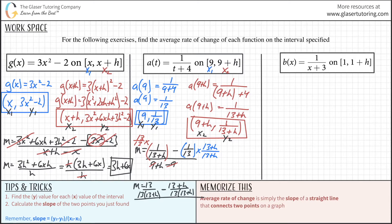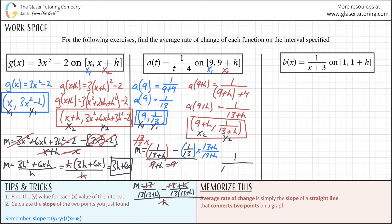When I combine the numerators, the 13s cancel and I'm left with -h over 13(13+h), all over h. The h cancels with the h in the denominator. So the average rate of change is negative one over 13(13+h). That is your answer.